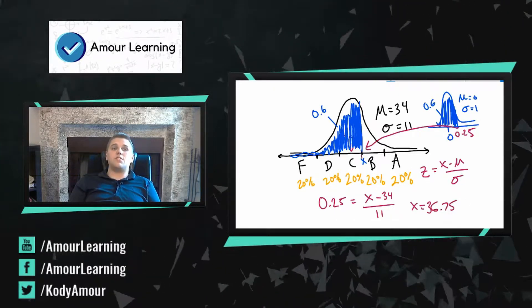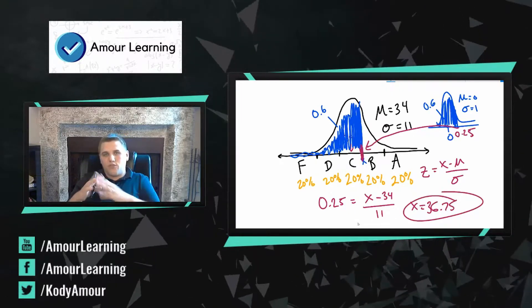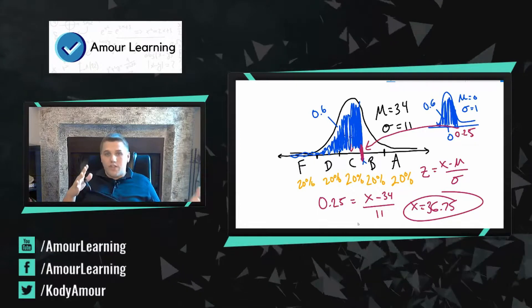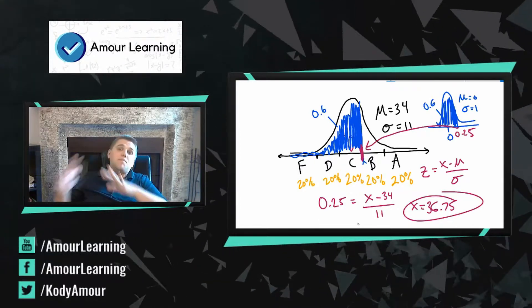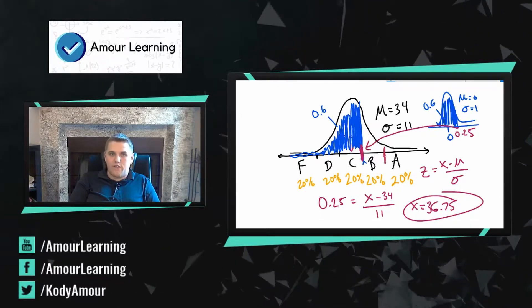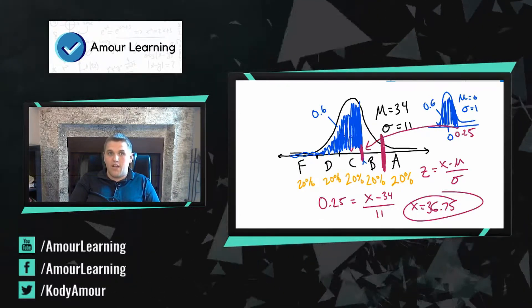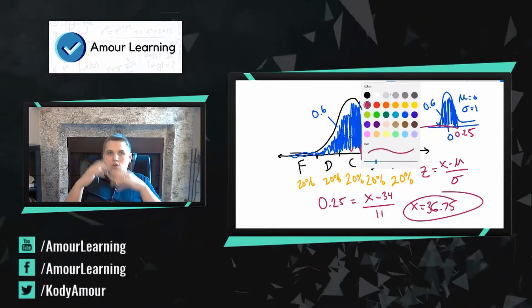So that means this cutoff right here would be 36.75. So if you got a grade that's greater than 36.75 on the test, that would be considered either a B or an A. Now if we wanted to figure out which one that was, we'd have to find this cutoff right here. And to find that cutoff, we need to do the same process over and over again.